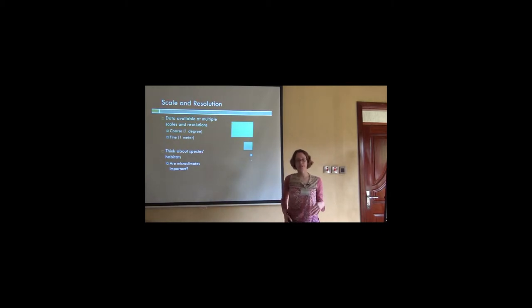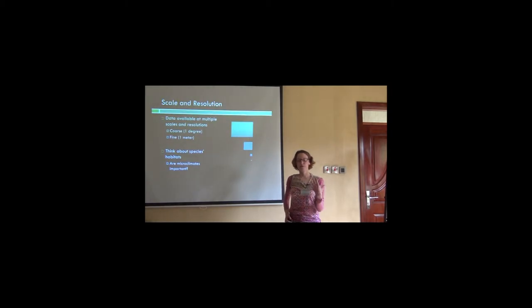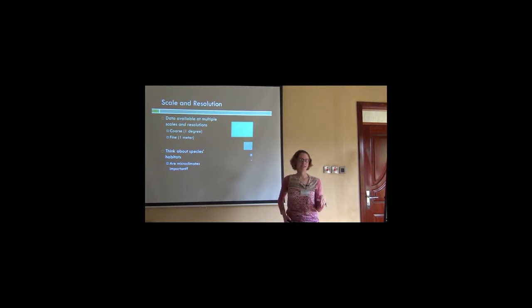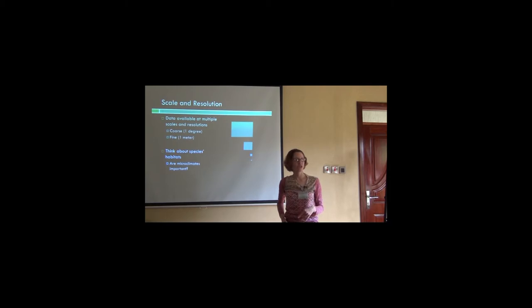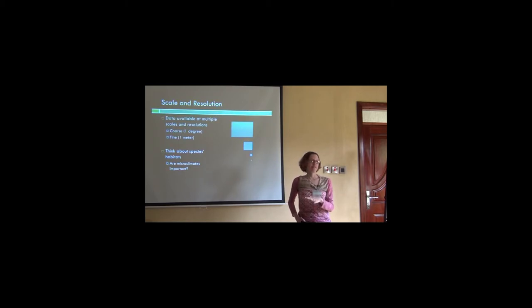All of these different data products come in a variety of different scales and resolutions. Climate data tends to be very coarse, so when you're looking at remote sensing products it can be hard to get an idea of the variation across your area. Interpolated surfaces often give you more information. Resolutions range from one degree all the way down to one meter. You have to think about your species and what scale of variation you want to look at to identify if you've captured the variation you're interested in across your study region.